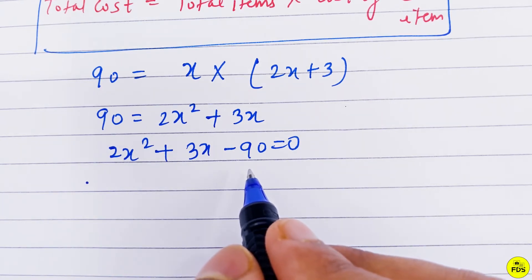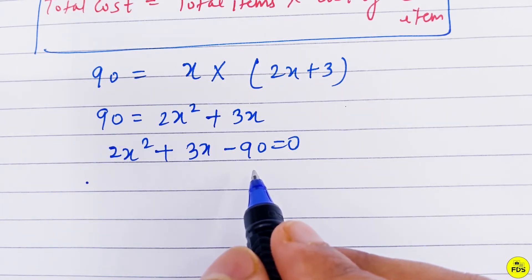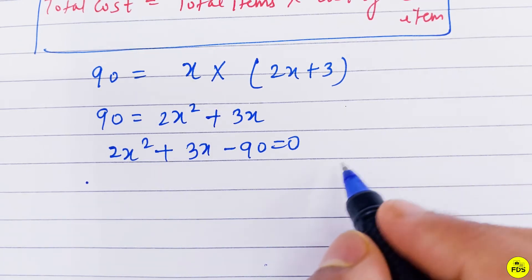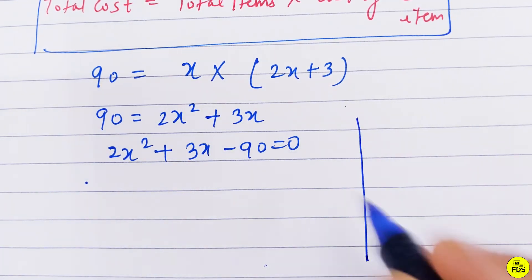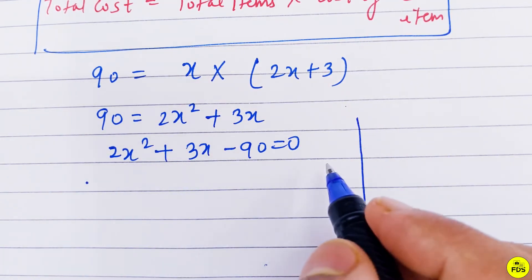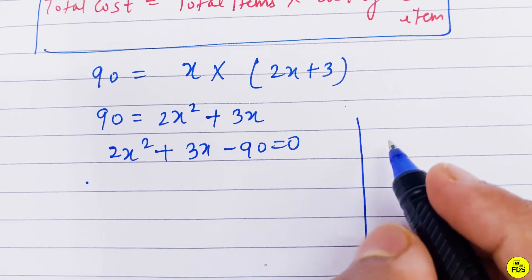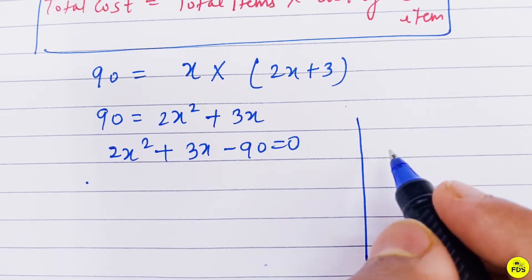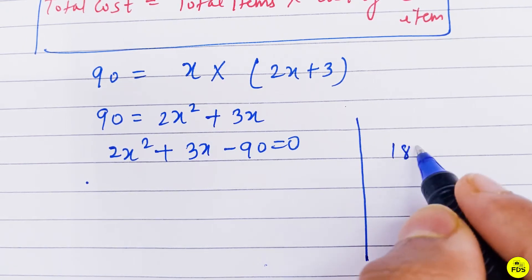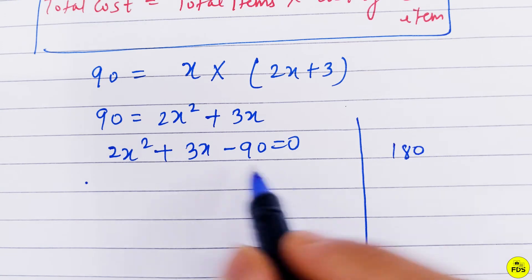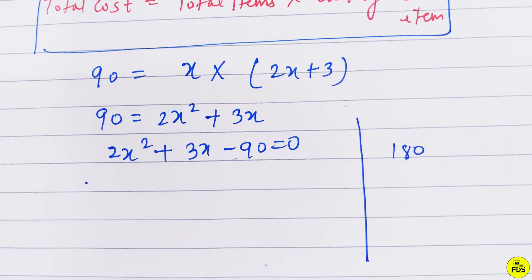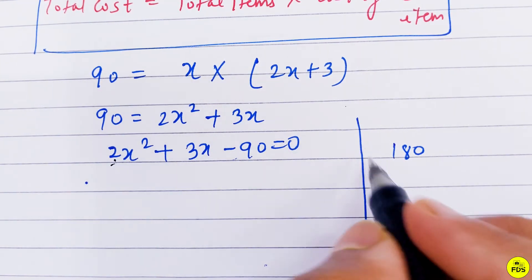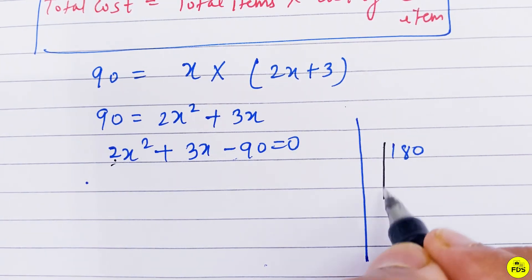Now we solve this quadratic equation using factorization. We multiply the coefficient of x², which is 2, by 90, giving us 180. We now need to find two numbers that multiply to 180 and whose difference gives us 3x.